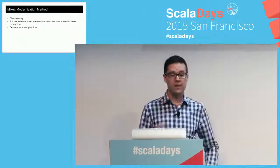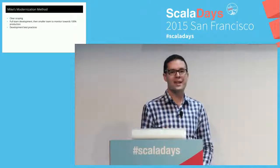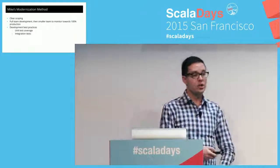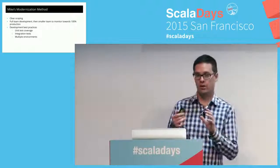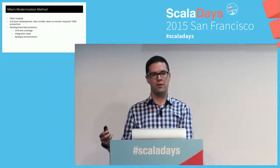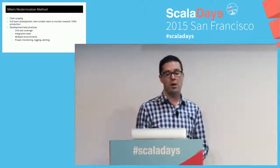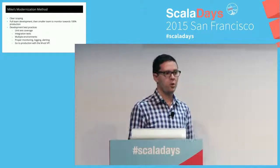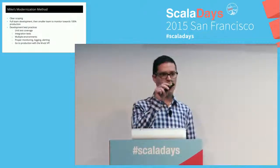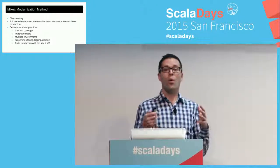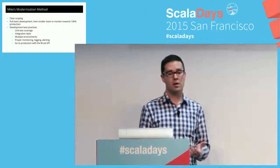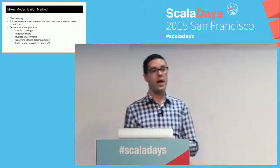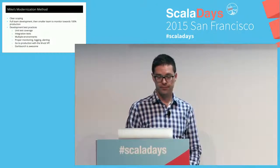From the very beginning we used development best practices to minimize the legacy problem we were creating: unit test coverage, integration tests, multiple environments (local virtualized, global development, staging in the cloud, and production), and proper monitoring, logging, and alerting. We had the philosophy of going to production with the minimum viable product — as soon as you have one endpoint done, get it into production. We could dark launch the private API within the dashboard monolith, switching between the new Owly and the old Owly. Dark launch is awesome.